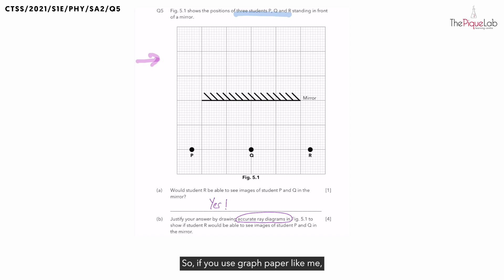So if you use graph paper like me, you can just count the number of boxes. Since P is two large boxes in front of the mirror, the image of P must be two large boxes behind the mirror. The image is usually labeled with an apostrophe, but check the question if they want you to use a specific label.